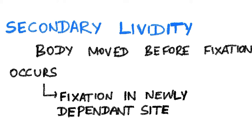There is a concept called secondary reliability. This happens when the body position is changed before fixation of livor mortis has occurred. For example, if a person died in the supine position and was then moved to the prone position before fixation, the staining will shift to the belly and front of the body rather than the back, because the dependent portion has changed.